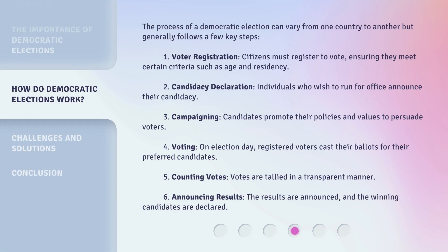The process of a democratic election can vary from one country to another but generally follows a few key steps. First, Voter Registration: citizens must register to vote, ensuring they meet certain criteria such as age and residency. Second, Candidacy Declaration: individuals who wish to run for office announce their candidacy. Third, Campaigning: candidates promote their policies and values to persuade voters. Fourth, Voting: on Election Day, registered voters cast their ballots for their preferred candidates.